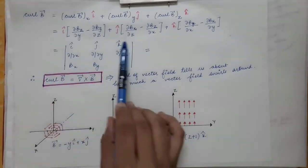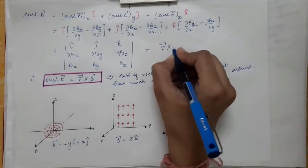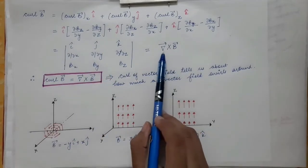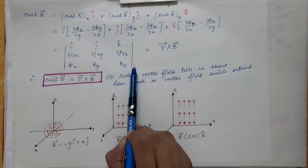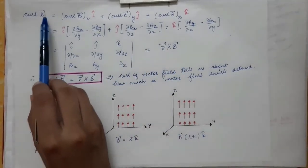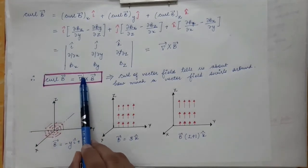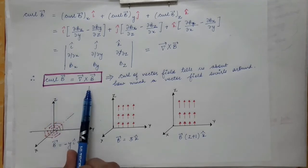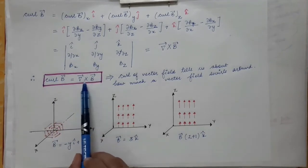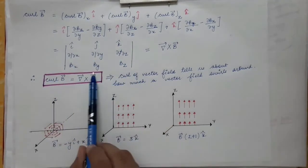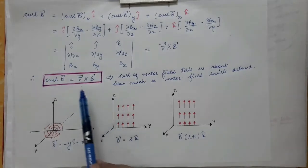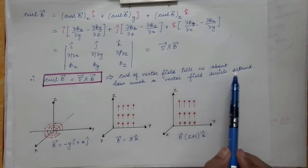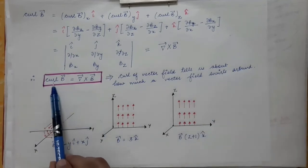This determinant is nothing but del cross B — the del operator crossed with B. So the curl of vector B can be evaluated using the formula del cross B. The physical significance of the curl of a vector field is that it tells us how much a vector field is rotating or swirling around a point.